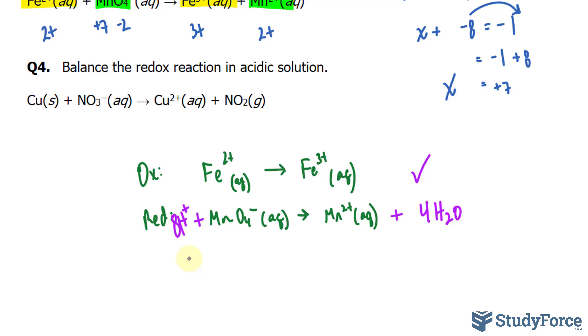Now we also need to balance the charges. We have a charge of 2 plus here and a charge of 3 plus. So over here, to balance out the charges, I can write down 1 electron. Now both sides are equal.